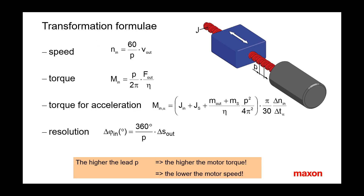The transformation formula for calculating the motor or screw rotational speed from the linear load velocity, and the motor torque from the linear feed force, can be found in the catalog and many textbooks. The basic mechanism is: the higher the lead P, the higher the necessary motor torque, the lower the necessary motor speed, and the higher the necessary encoder resolution for positioning.